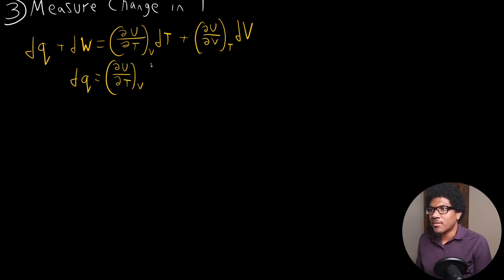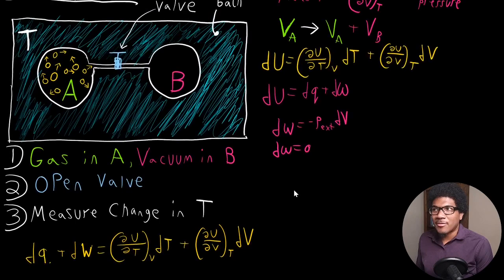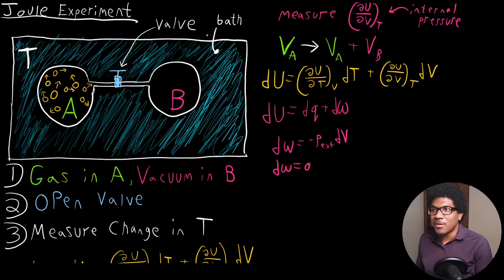So now the one thing that we need to know from what Joule actually measured: when he did this expansion of a gas, he was measuring the temperature change in the bath. He actually measured a temperature change of zero. So there was no temperature change. So this is what he measured. His grand result here was that there was no temperature change when the gas expanded.